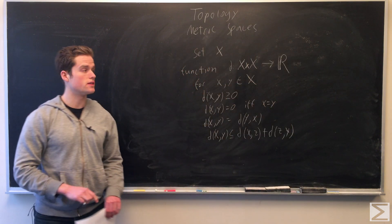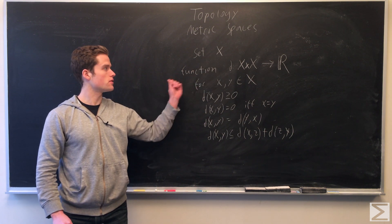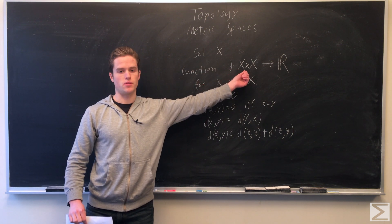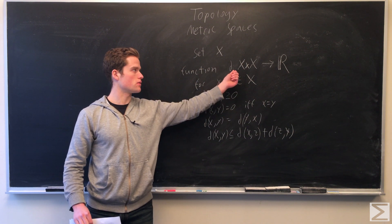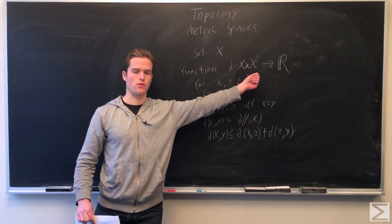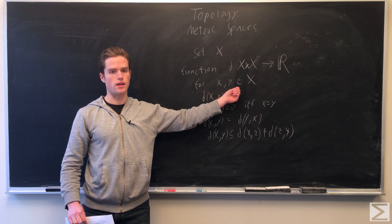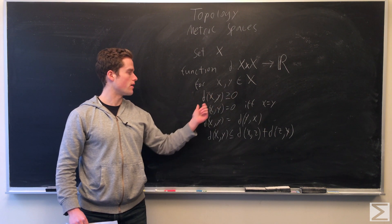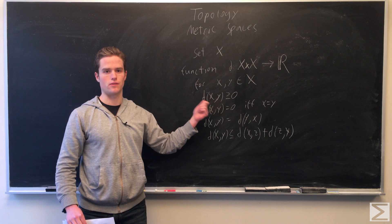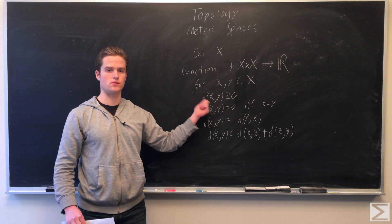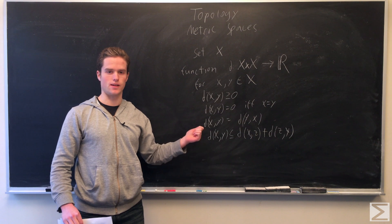A metric space is: we have some set X and a function from X times X — so for any two points in X — we have a function taking those two points and giving us a real number. So for any x, y in X, we have d(x, y). We call d a distance function because of the axioms it satisfies, which kind of make it behave like a distance.